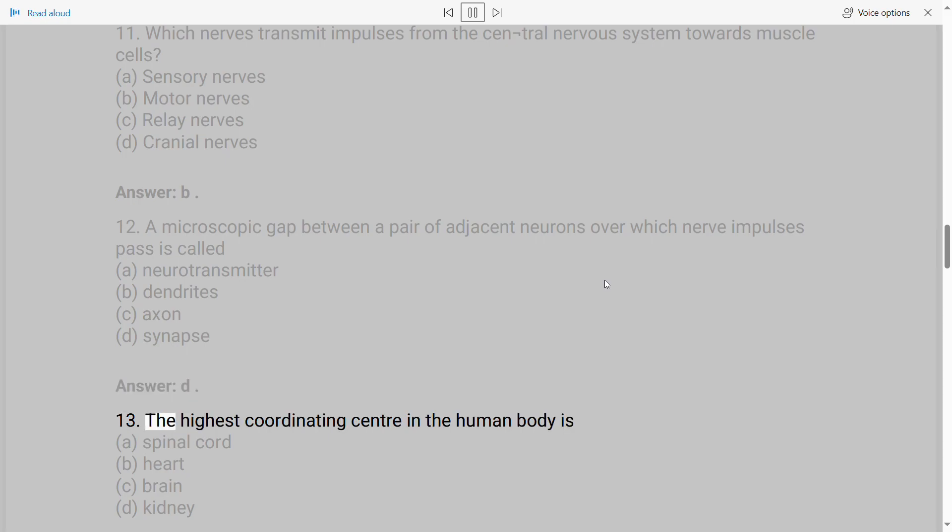13. The highest coordinating center in the human body is A. Spinal cord B. Heart C. Brain D. Kidney. Answer: C.